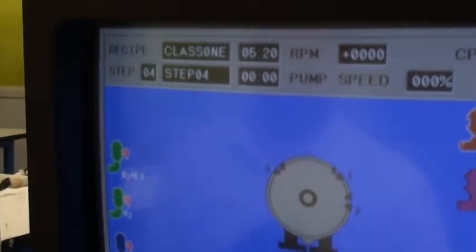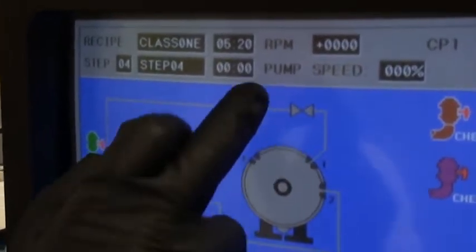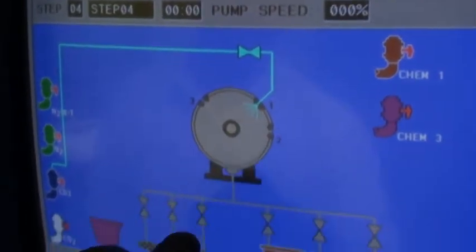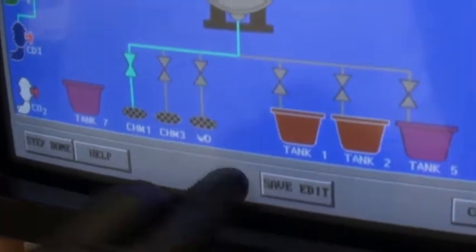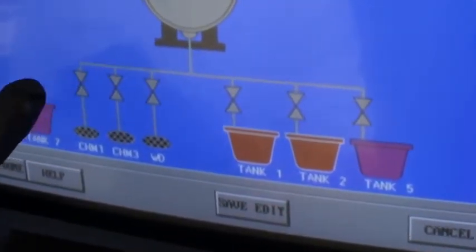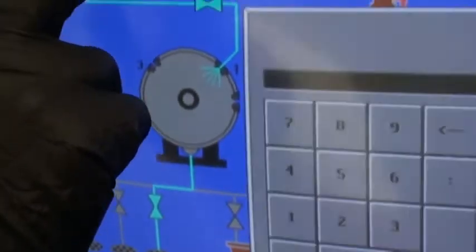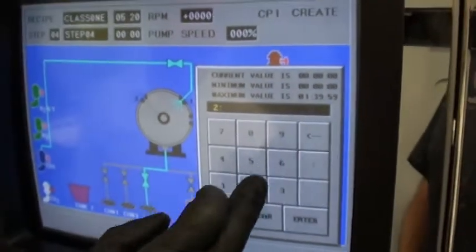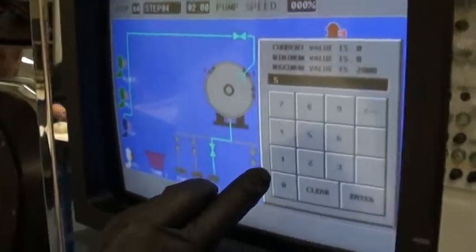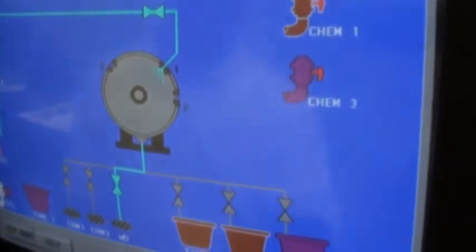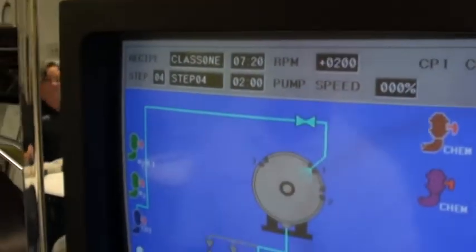Next step, we'll go through the DI rinse. We'll send it down industrial waste drain, and we'll do a two minute rinse. We'll ramp the RPMs up to 200. Step done.